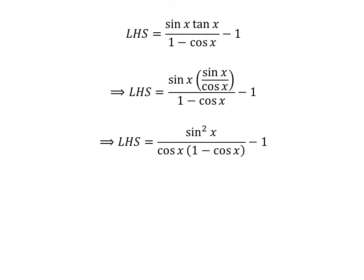Further simplification gives us: the left hand side of the identity is equal to square of sine of x upon cosine of x, times 1 minus cosine of x, minus 1.